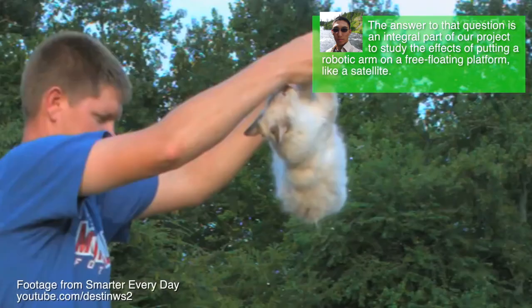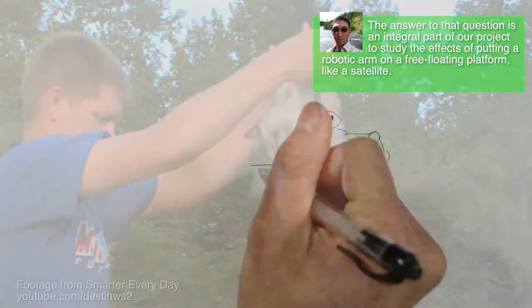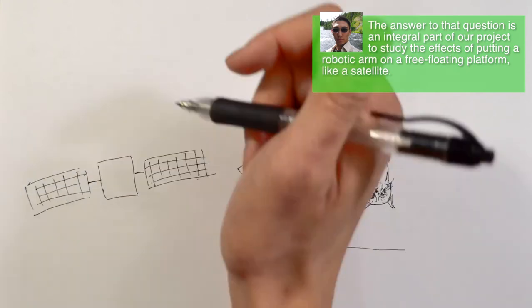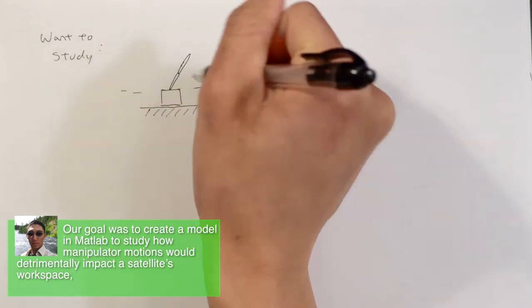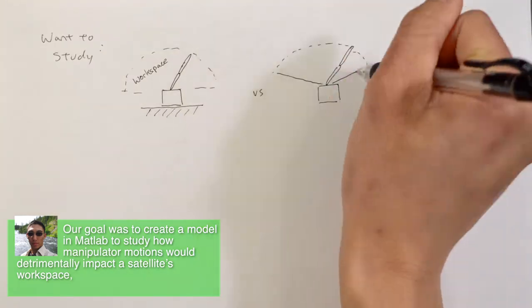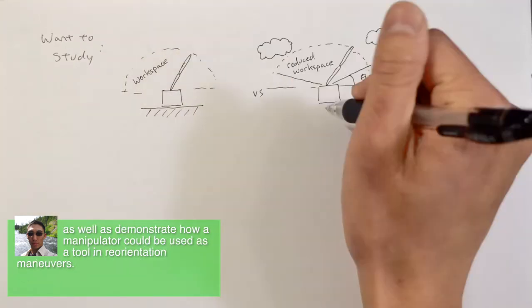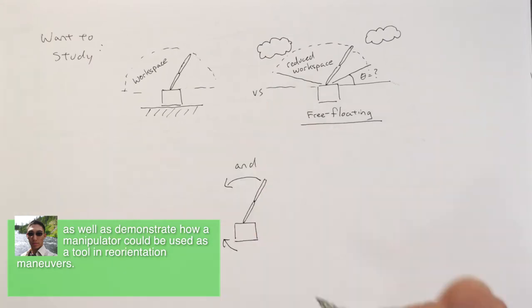The answer to that question is an integral part of our project to study the effects of putting a robotic arm on a free-floating platform like a satellite. Our goal was to create a model in MATLAB to study how manipulator motions would detrimentally impact a satellite's workspace, as well as demonstrate how a manipulator could be used as a tool in reorientation maneuvers.